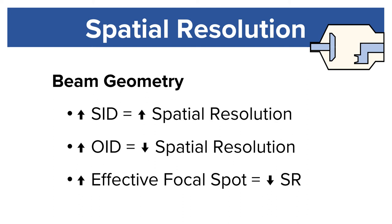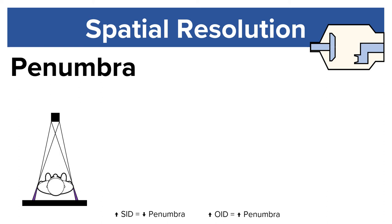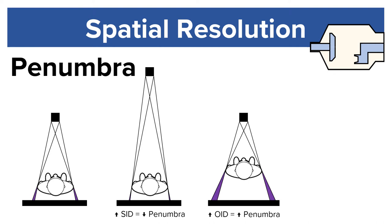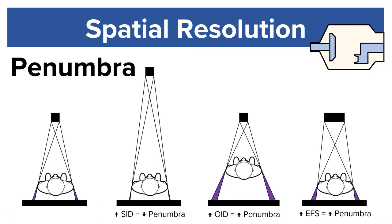What is penumbra? Penumbra is the area of unsharpness around an object. If you increase SID, you'll decrease penumbra. If you increase OID, you'll increase penumbra. And if you increase effective focal spot, you'll also increase penumbra.